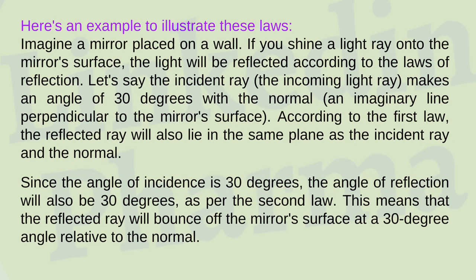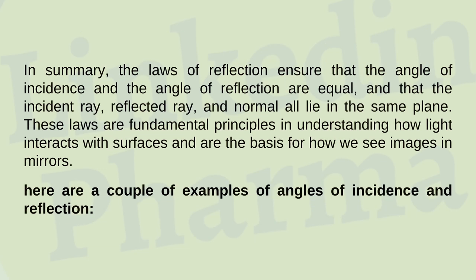Here's an example to illustrate these laws. Imagine a mirror placed on a wall. If you shine a light ray onto the mirror's surface, the light will be reflected according to the laws of reflection. If the incident ray makes an angle of 30 degrees with the normal — an imaginary line perpendicular to the mirror's surface — according to the first law, the reflected ray will lie in the same plane as the incident ray and the normal. Since the angle of incidence is 30 degrees, the angle of reflection will also be 30 degrees, as per the second law. In summary, the incident ray, reflected ray, and normal all lie in the same plane.